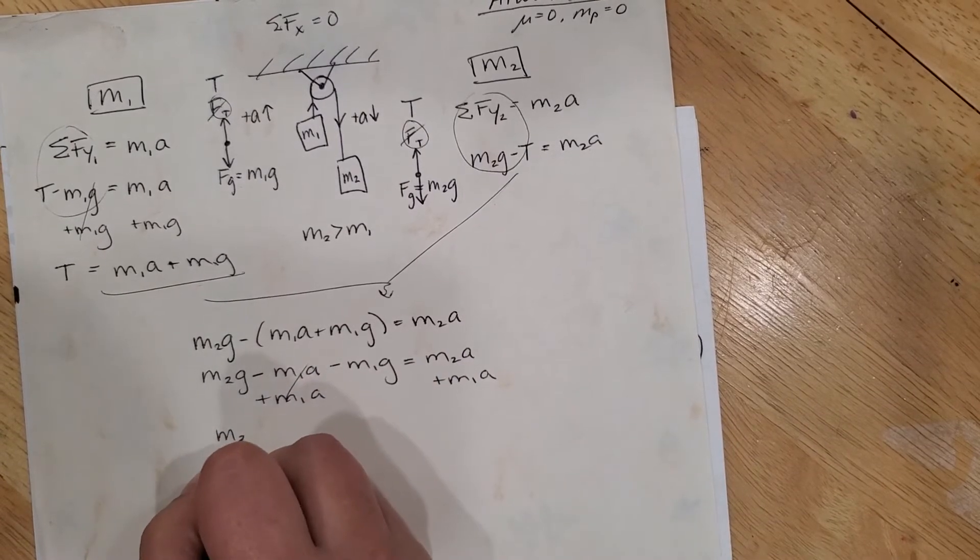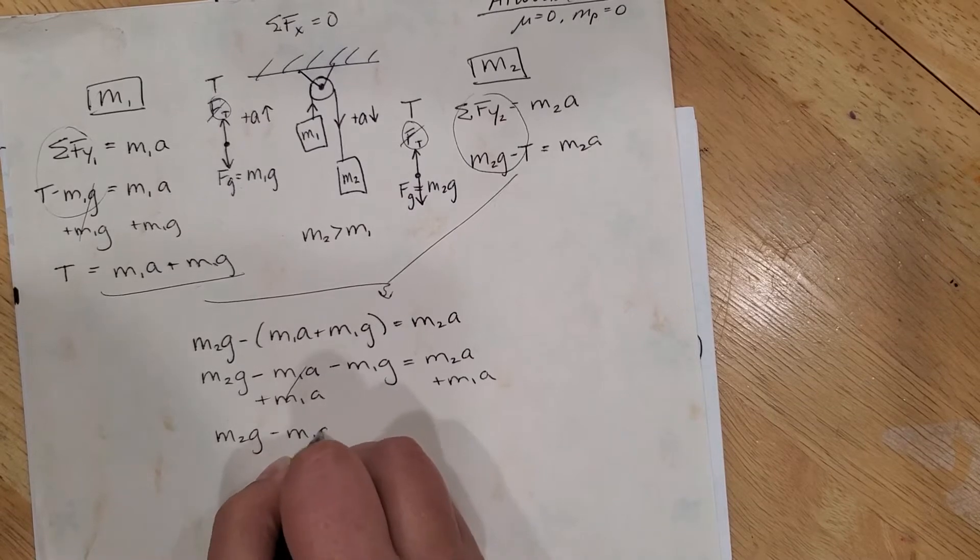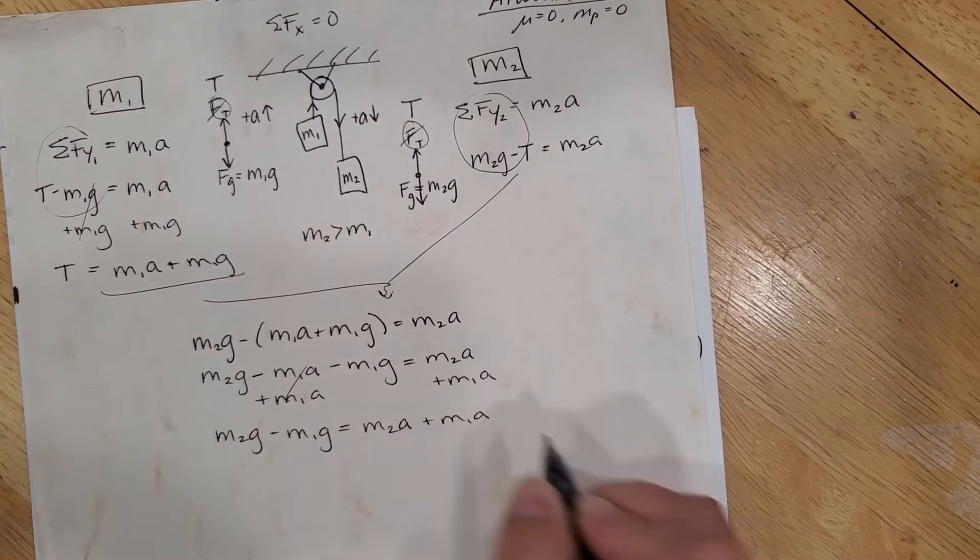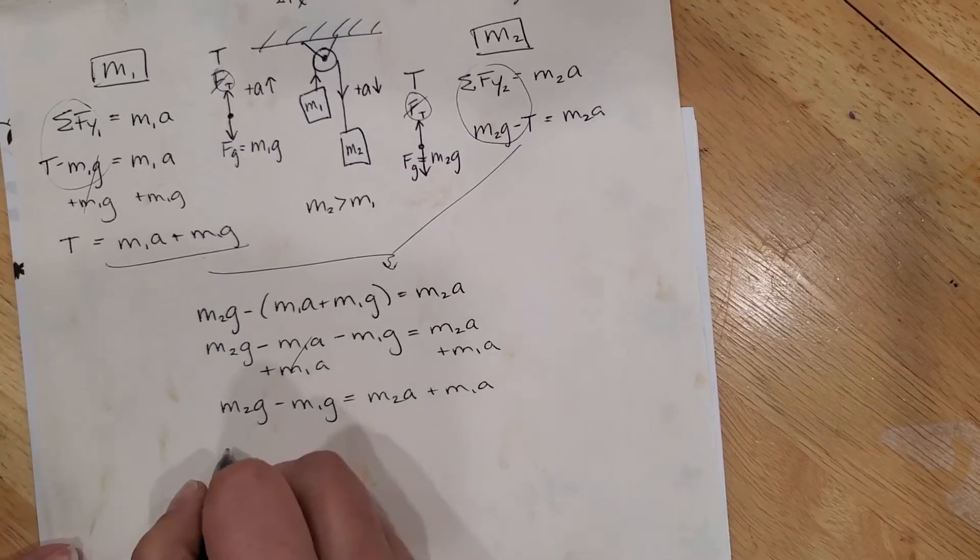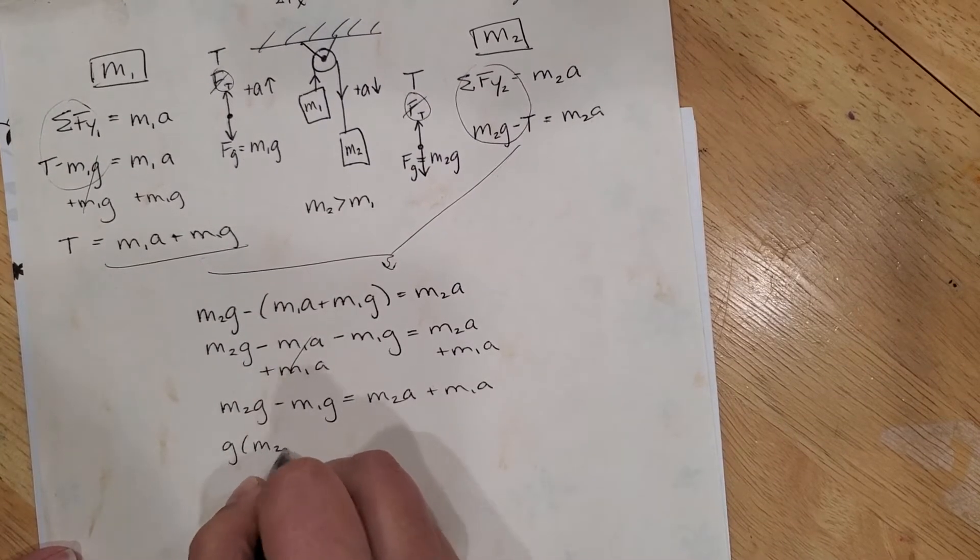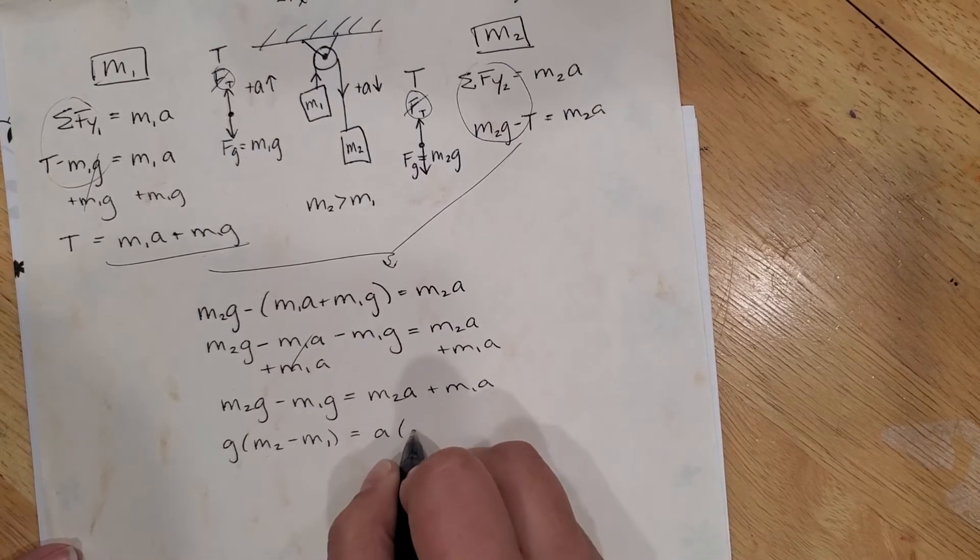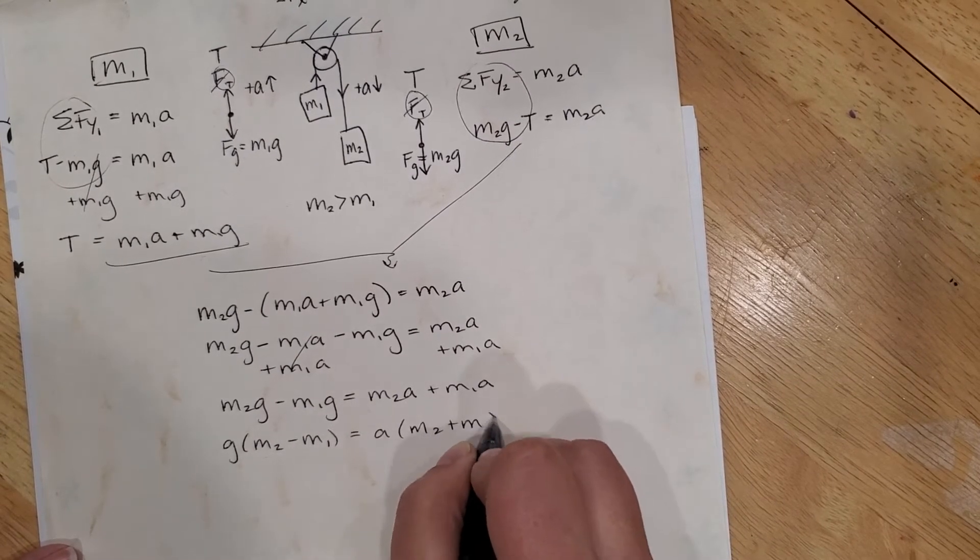We have m2g minus m1g is equal to m2a plus m1a and we'll factor the g out on the left so we have m2 minus m1 and factor the a out on the right m2 plus m1. Whoo, I see a pattern, love when that happens.